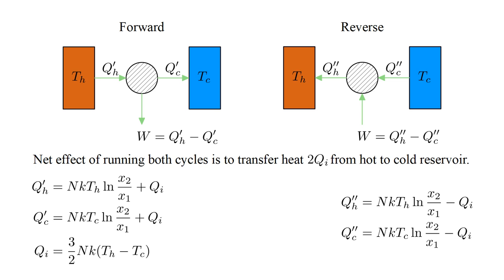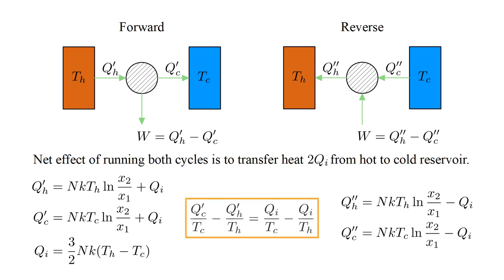So the Stirling cycle is not reversible. Let's consider the quantity: transferred heat divided by temperature. In the forward cycle, the amount delivered to the cold reservoir, Q-cold prime over T-cold, minus the amount extracted from the hot reservoir, Q-hot prime over T-hot, is not equal to zero — unlike the Carnot cycle. Instead it's Q-I over T-cold minus Q-I over T-hot, which is greater than zero. So this quantity was not conserved, but instead increased.